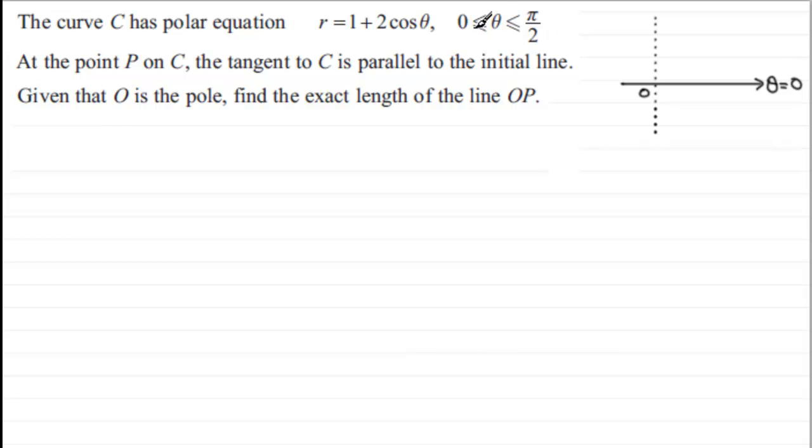Now, if I was to sketch this curve for theta between 0 and pi upon 2 radians, when theta equals 0, you're going to get cosine of 0 would be 1, and so this is going to be 1 plus 2, which is 3. So you're going to start out here, let's just mark that in as 3.